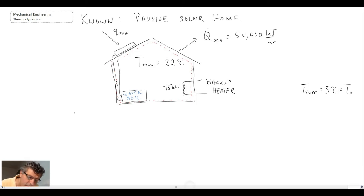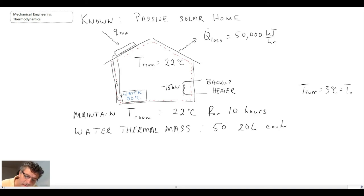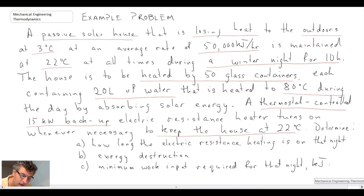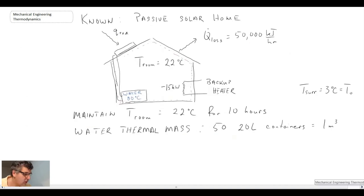So what are we after? We're trying to maintain T room equals 22°C for 10 hours during the night. The water thermal mass consists of 50 20-liter containers, which turns out to be one cubic meter of water. The things we're trying to find are how long does the heating system come on, exergy destruction, and minimum work input required. With that, we're going to go into our analysis for this problem.